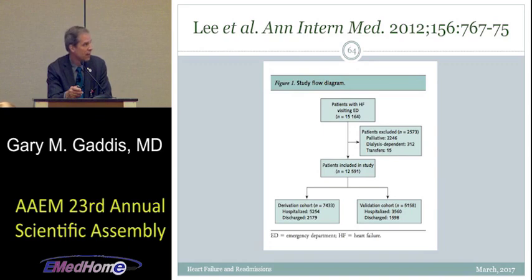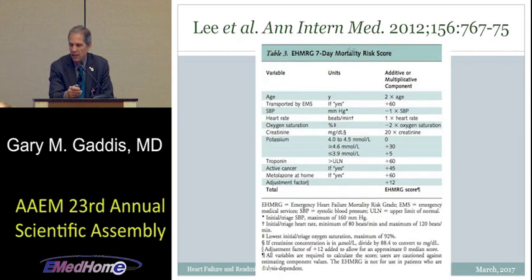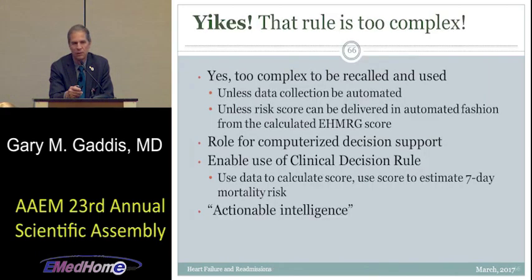They had 15,000 potentially eligible patients, excluded some on dialysis or in palliative care, leaving about 12,600 patients, with derivation in one set and validation in another. The rule includes age, EMS transport, systolic blood pressure, heart rate, oxygen saturation, creatinine, and potassium — a 10-element rule. You might think such a complex rule can't be kept straight in the ED, but if it can be automated, it becomes useful.